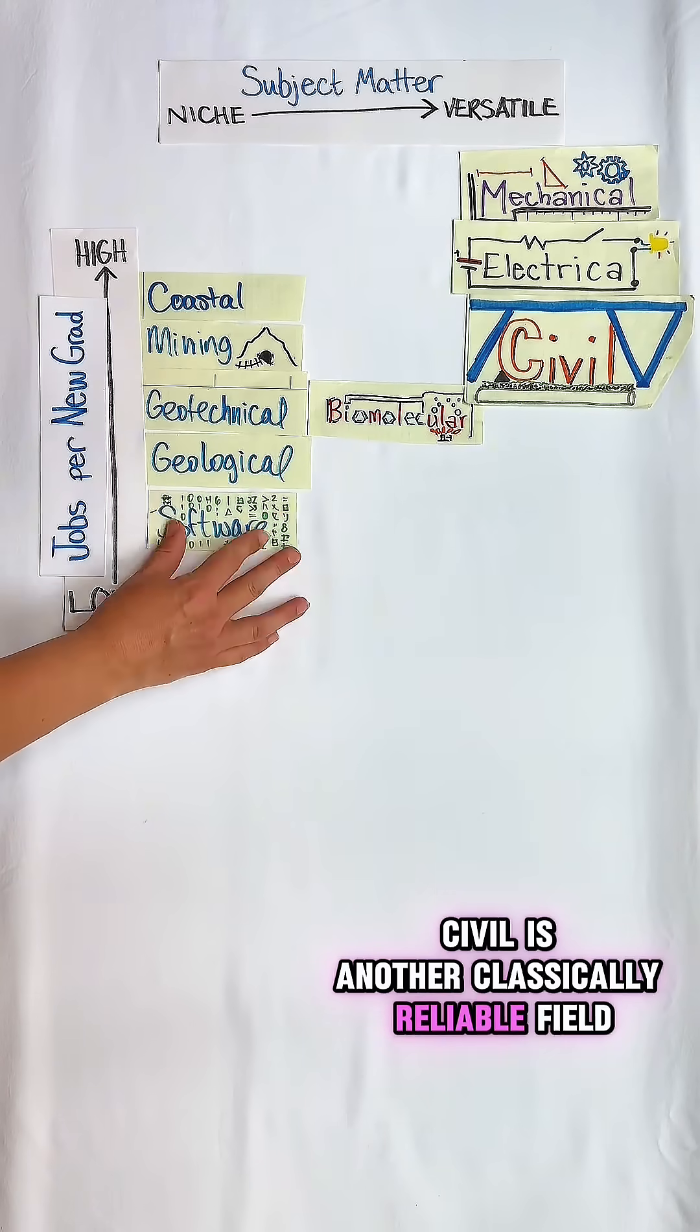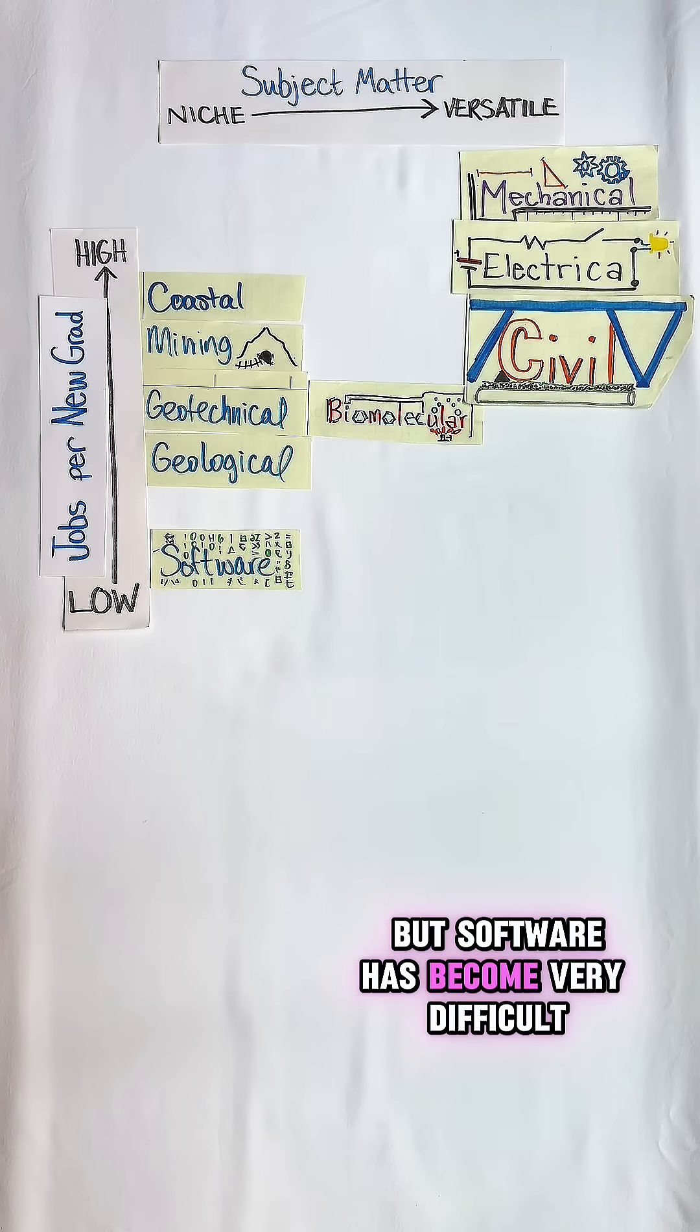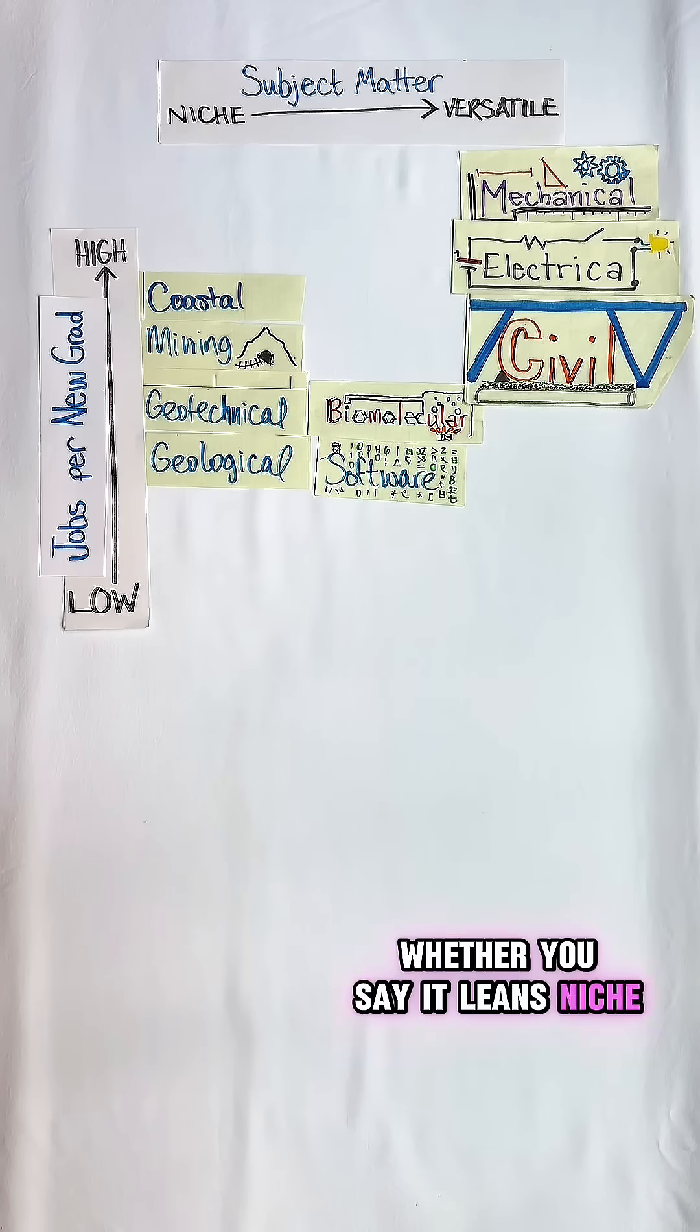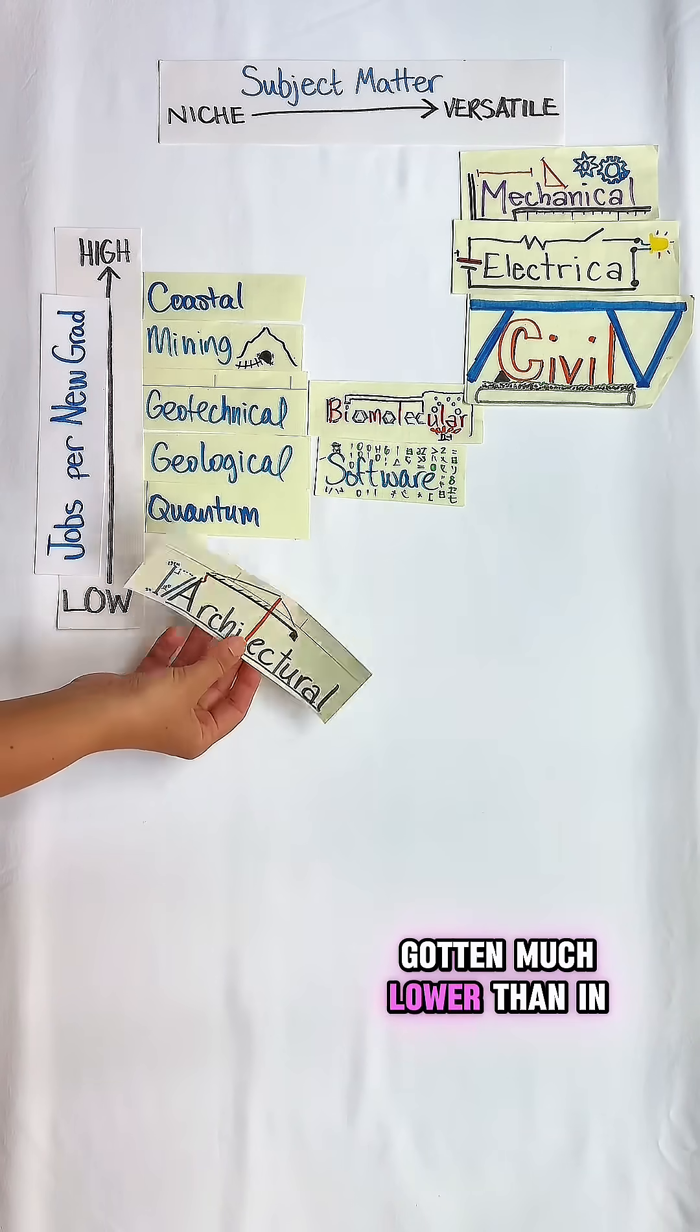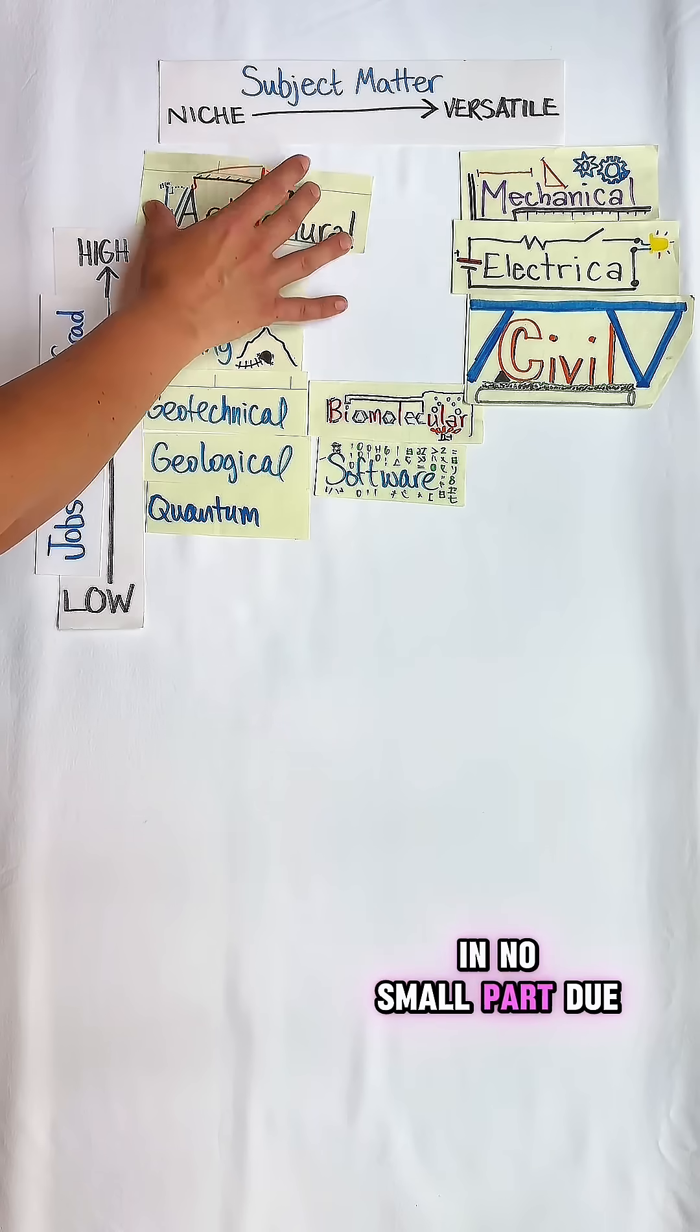Civil is another classically reliable field. But software has become very difficult to place. Whether you say it leans niche or versatile, the fact is jobs per new grad have gotten much lower than in recent years, in no small part due to AI.